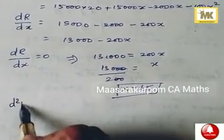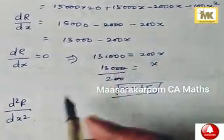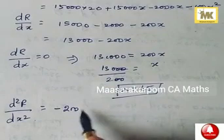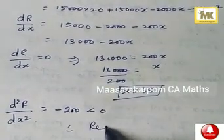Find d squared R by dx squared. That is, you have to differentiate this again. This is equal to minus 200, which is less than 0. Negative, therefore revenue attains maximum.